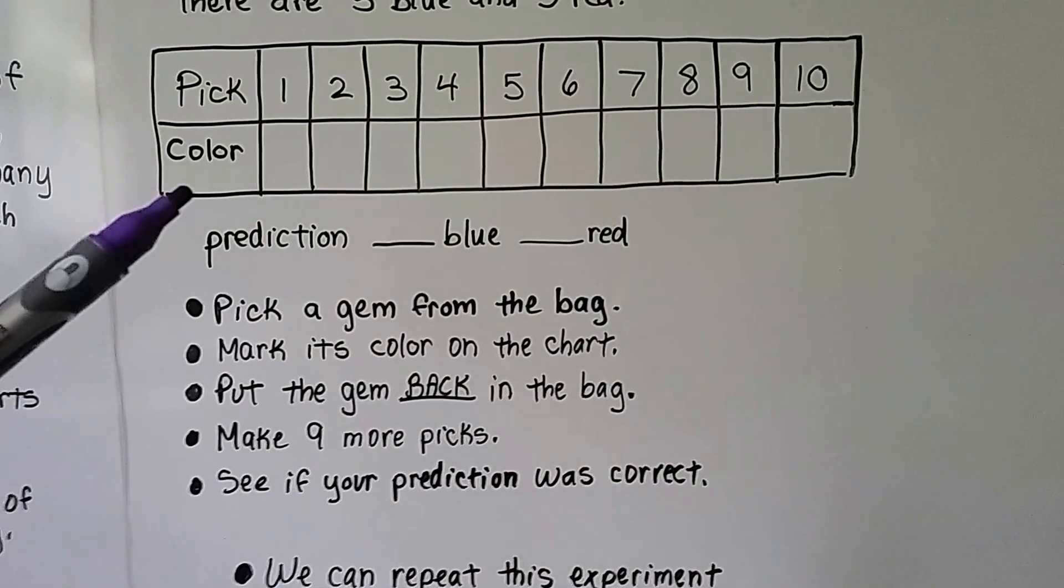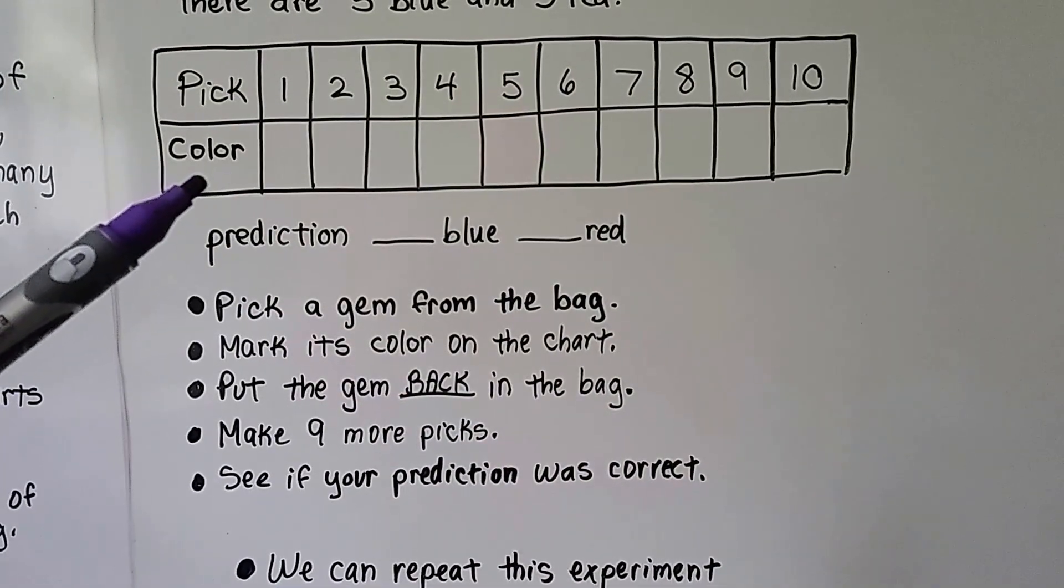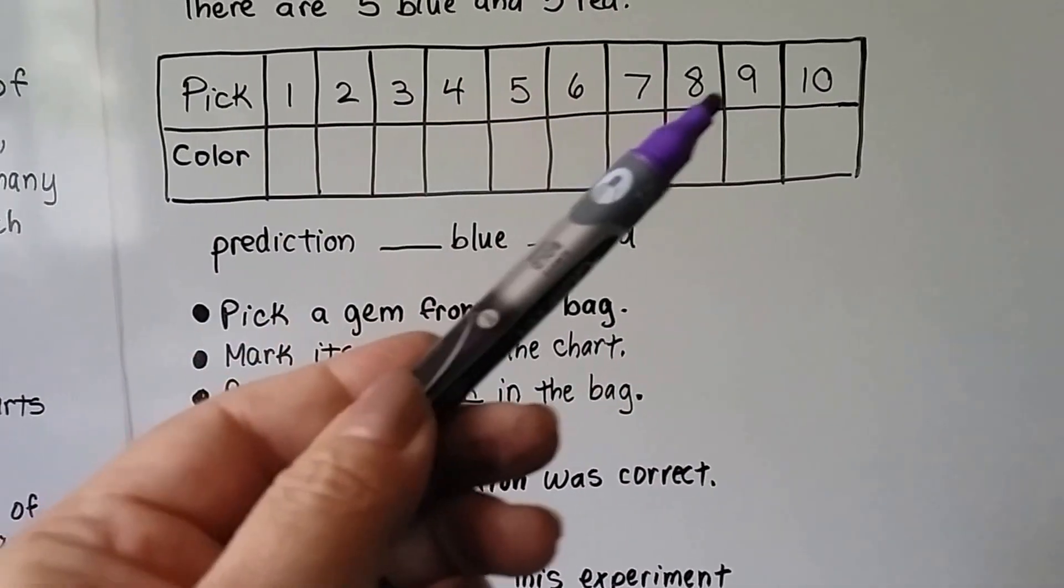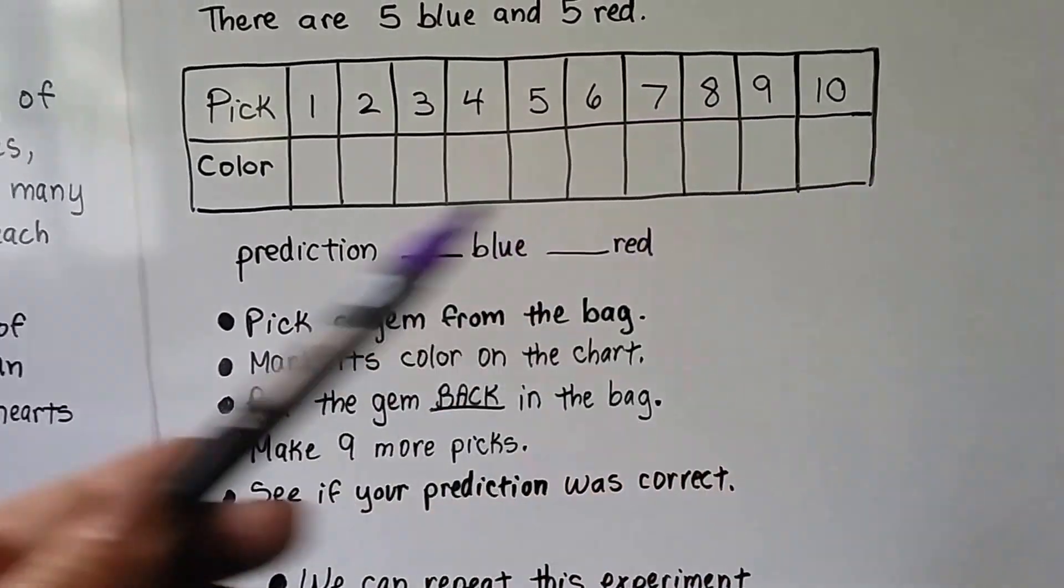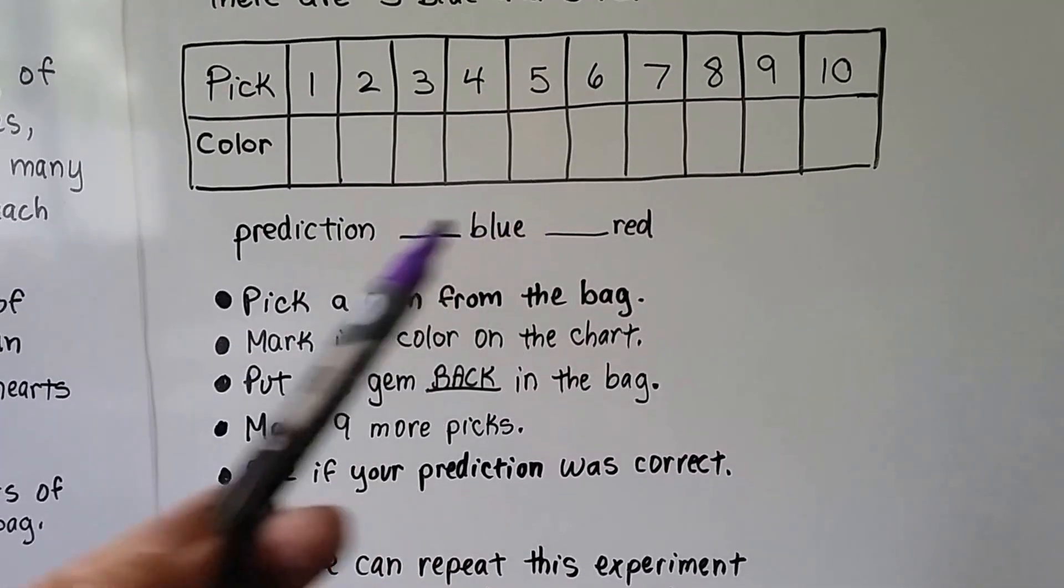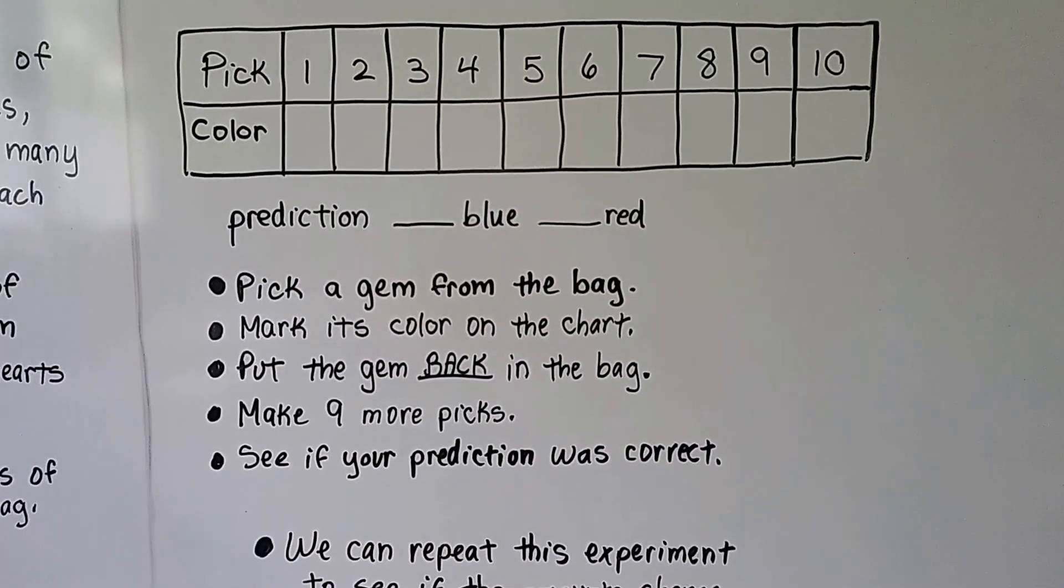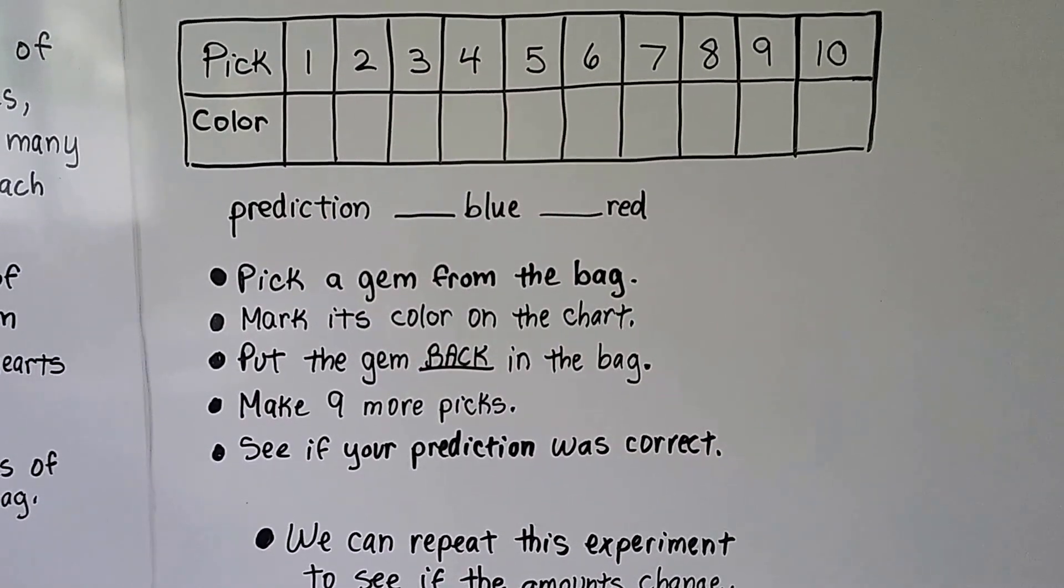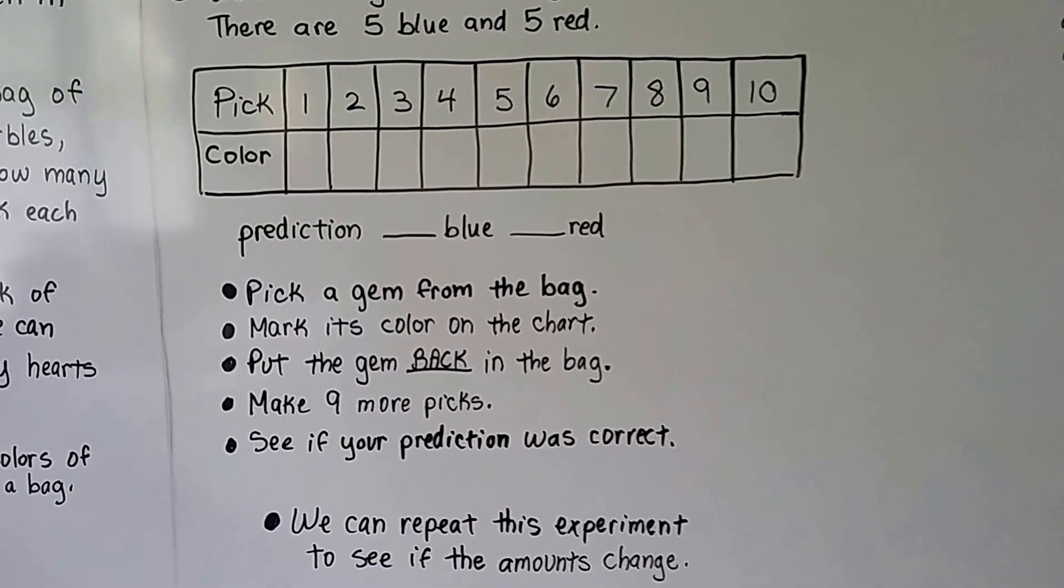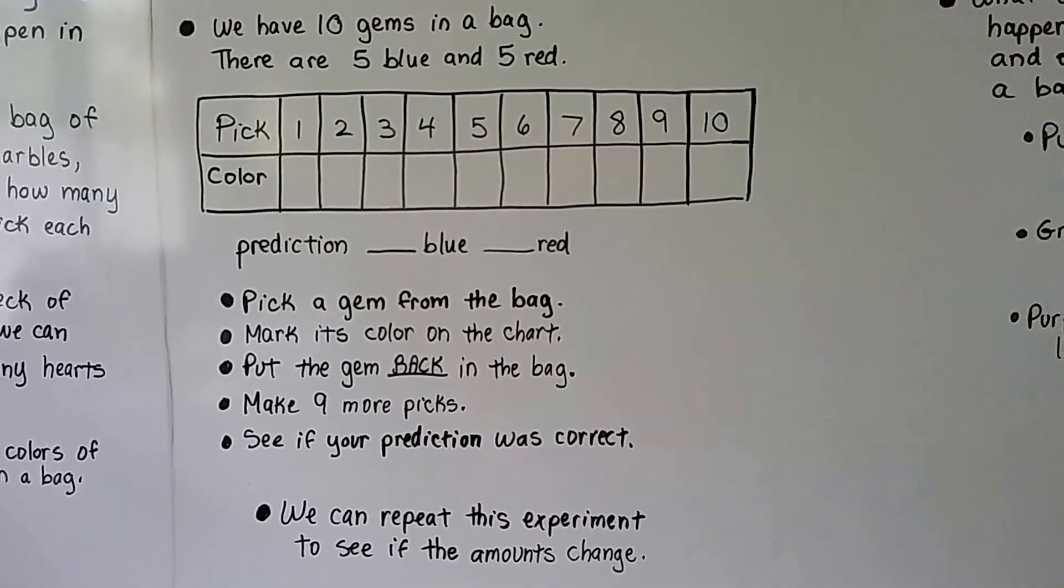So, just make yourself a chart like this that shows how many times you're going to pick. You don't have to do ten. You could do eight, you could do twelve, you could do twenty. It's up to you. And mark which prediction you think you're going to have for how many colors you're going to pick of each, okay? Might be some fun. And you can use anything.